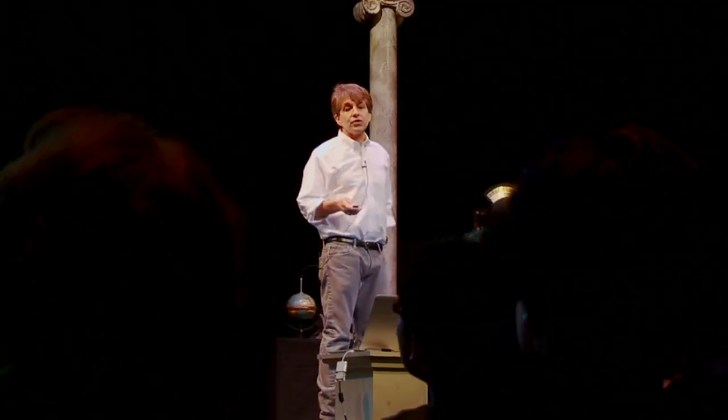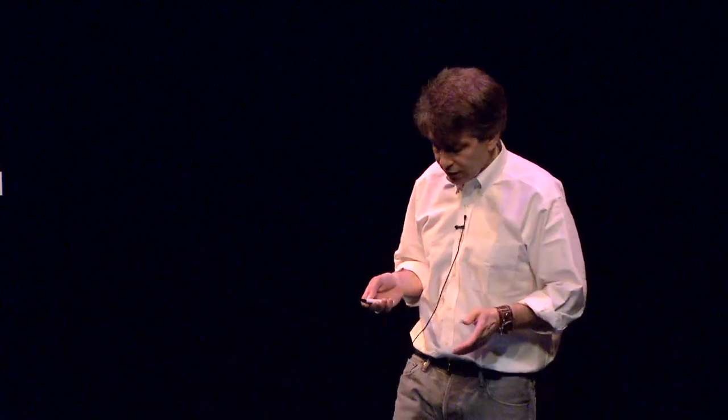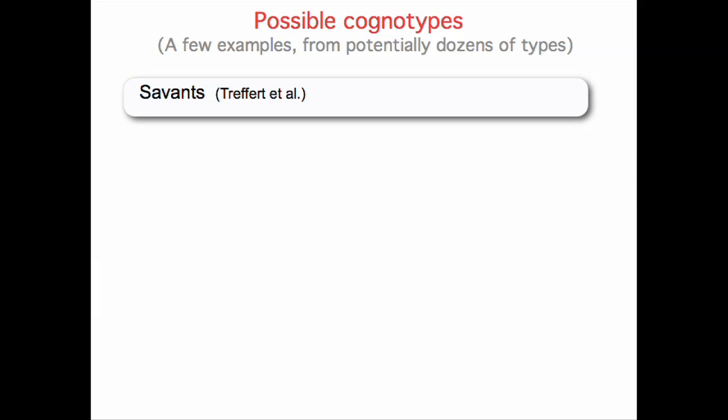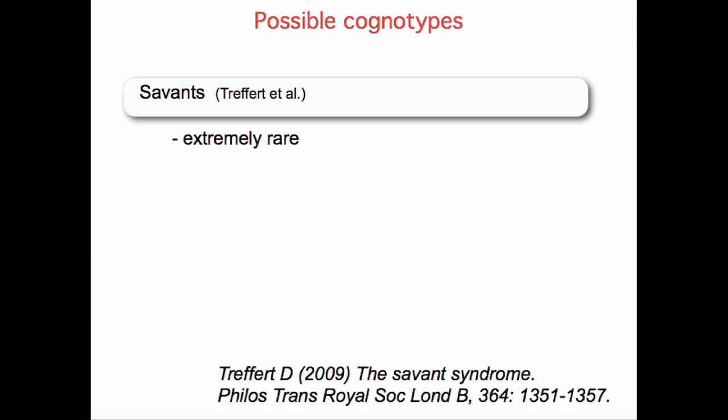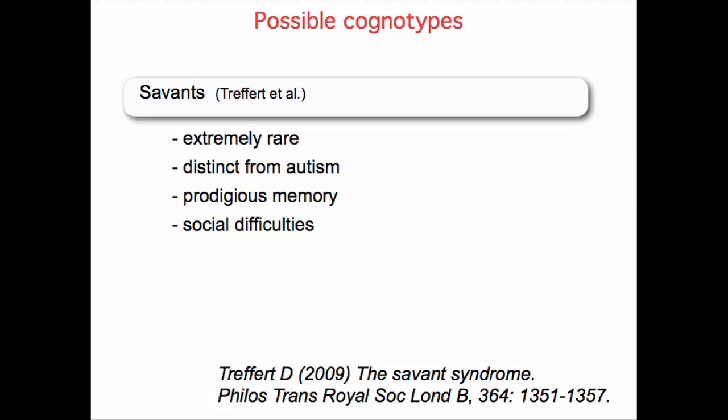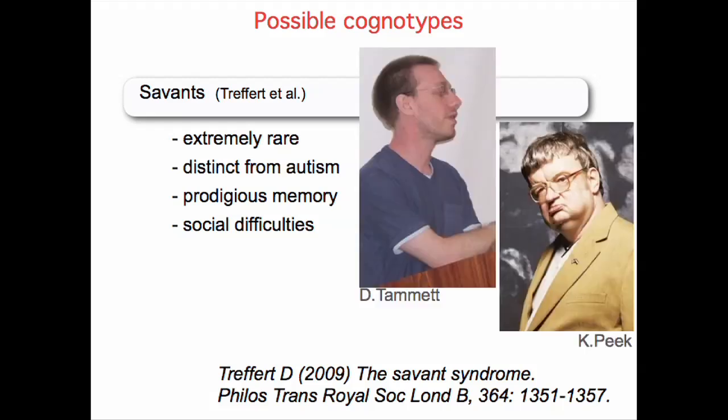There are actually dozens and dozens of examples of cognotypes — once you start to look, you see them everywhere, and there's a lot of brain evidence for them. Savants are a very rare genetic modification. They're not autistic, but they have amazing memories — they can often sit down at a piano and play a piece they've only heard once. They tend to have difficulty in social situations. Some very well-known examples include Daniel Tammet and Kim Peek, who was the model for the character in the movie Rain Man. Again, certain gene configurations build certain kinds of brains that give rise to these cognotypes.